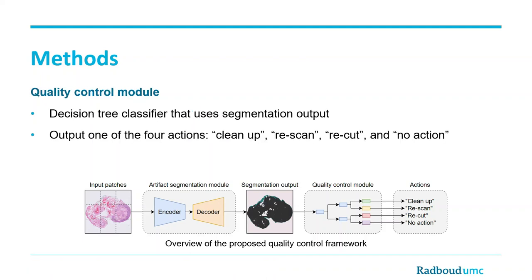The framework also contained a quality control module in the form of a decision tree. Manual features were extracted from the segmentation output and forwarded into the quality control module. This module then outputs one of four actions: clean up, rescan, recut, and no action.